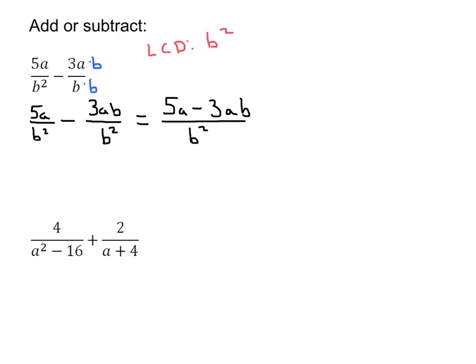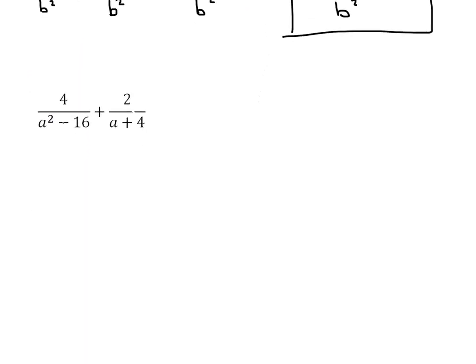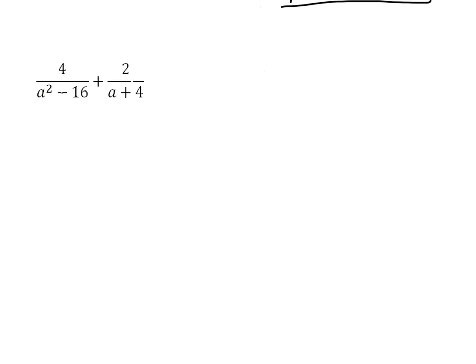So now let's take a look at another one. We have 4 over a squared minus 16, plus 2 over a plus 4. Before we find the least common denominator, if we can factor, we're going to go ahead and do that. We're going to factor using difference of squares. So I'm going to rewrite the top as 4, and the bottom factors into a plus 4...